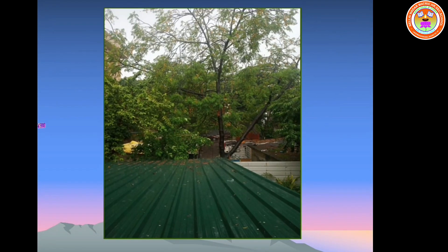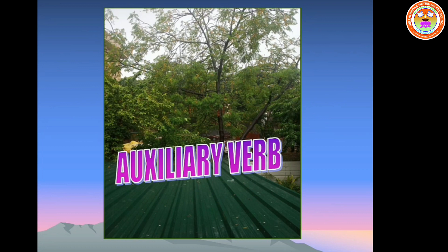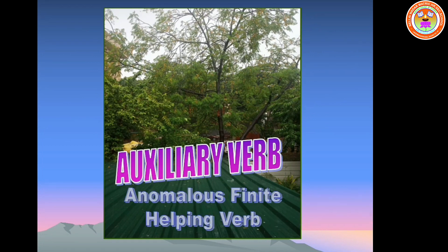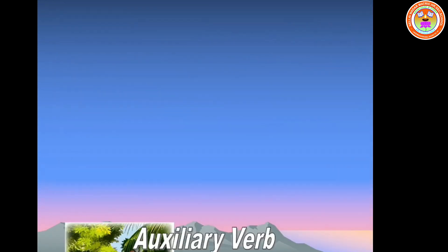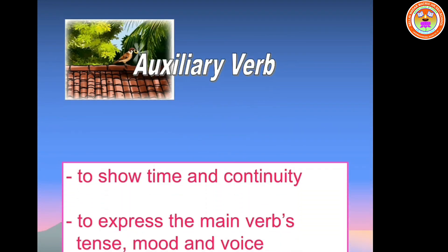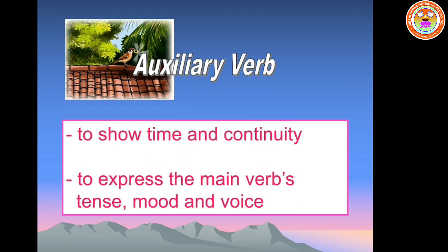Dear children, today's topic is auxiliary verb. It is called anomalous finite or helping verb. Auxiliary verb is a verb that is used with another verb to show the time and continuity. Auxiliary verbs are usually used with a main verb to express the main verb's tense, mood and voice.